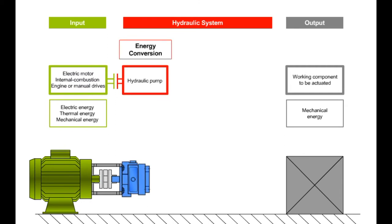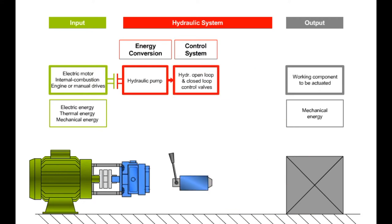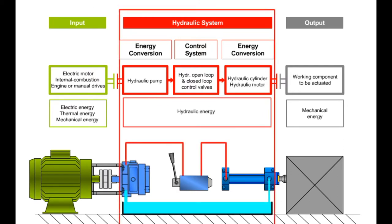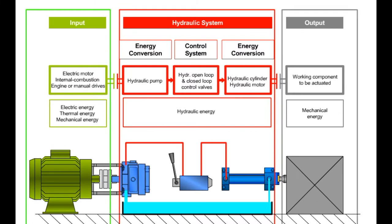The hydraulic system lies between the input and output sides. Its task is to transport energy as needed from the input to the output side. A hydraulic pump converts energy from the input into hydraulic energy and is therefore an energy converter. The energy must then be regulated according to the requirements of the output side. Hydraulic control valves fulfill these roles. The correctly regulated energy is then converted into mechanical energy by hydraulic cylinders or hydraulic motors.